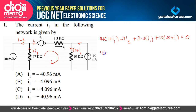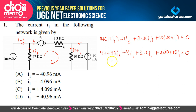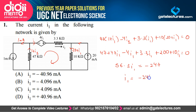Solving and simplifying, we get 56.3 I1 equals minus 247. Therefore I1 equals minus 247 divided by 56.3, which comes out to approximately minus 4.096 milliampere, which is option B. So the correct answer to this question is option B.